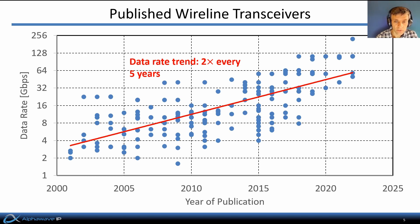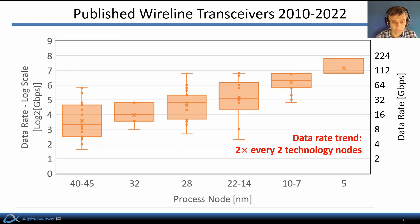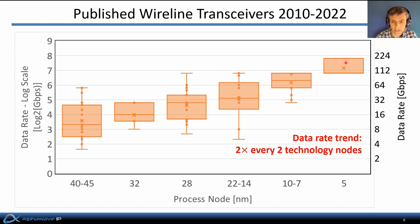Here's a plot of published wireline transceivers at VLSI Symposium and ISSCC over the past two decades. There's a wide distribution of publications but a clear trend towards increasing data rate at a rate of a factor of two every five years. A similar plot on a log scale shows data rate doubling every major grid line versus process technology node on the x-axis — doubling in data rate every two technology nodes, roughly corresponding to five years.